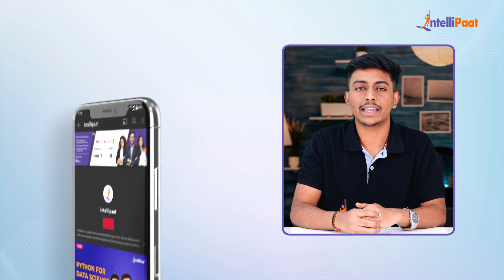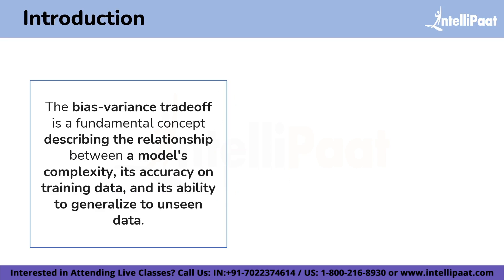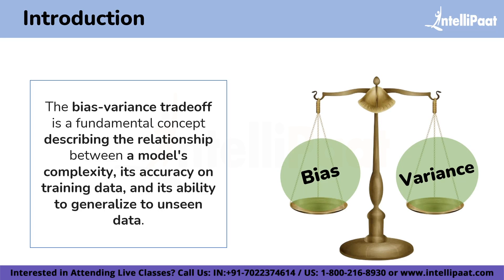But before we do that, make sure to enable the subscribe button and bell icon for the Intellipaat YouTube channel so that you won't miss any updates. Let's start with a small intro to get an idea about what bias and variance trade-off is. The bias and variance trade-off is a fundamental concept describing the relationship between a model's complexity, its accuracy on training data, and its ability to generalize to unseen data — essentially a balancing act between two sources of error: bias and variance.